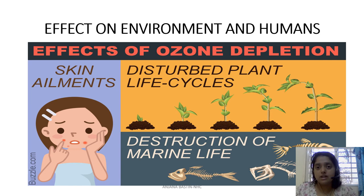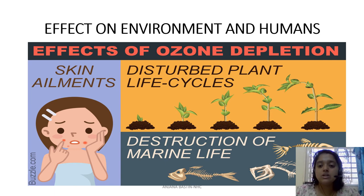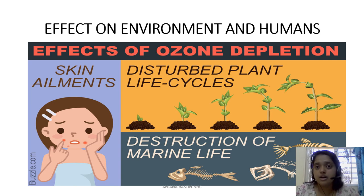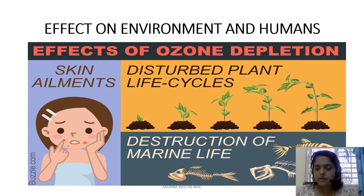Ozone layer depletion has an effect on coral reefs — similar to what we learned in global warming — and also destroys marine life. Ultraviolet rays can easily penetrate into sea water and cause a direct effect on the marine ecosystem, leading to a decline of organisms. Phytoplanktons — plant-like organisms found on the surface of water which are fed upon by fishes — are disintegrated when ultraviolet rays hit the sea surface due to ozone layer depletion.